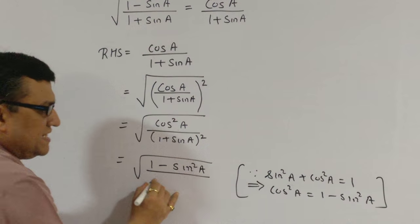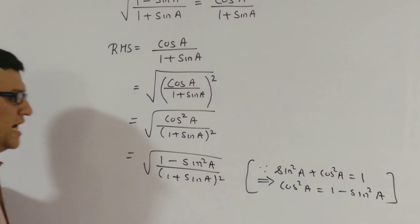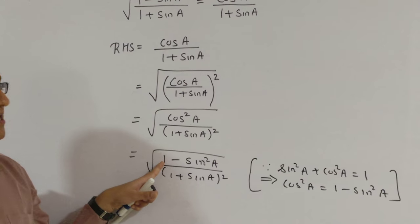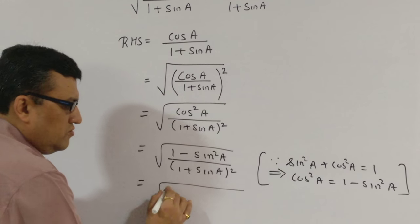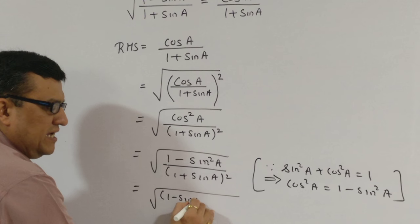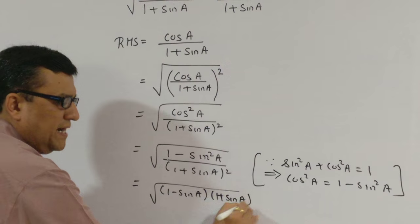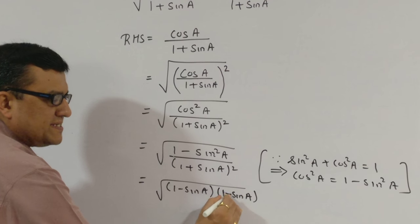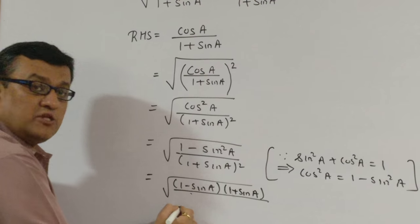In the denominator 1 plus sine A the whole square. Now we can always take this as A square minus B square, whereby it turns into 1 minus sine A, 1 plus sine A, 1 minus sine A, 1 plus sine A.